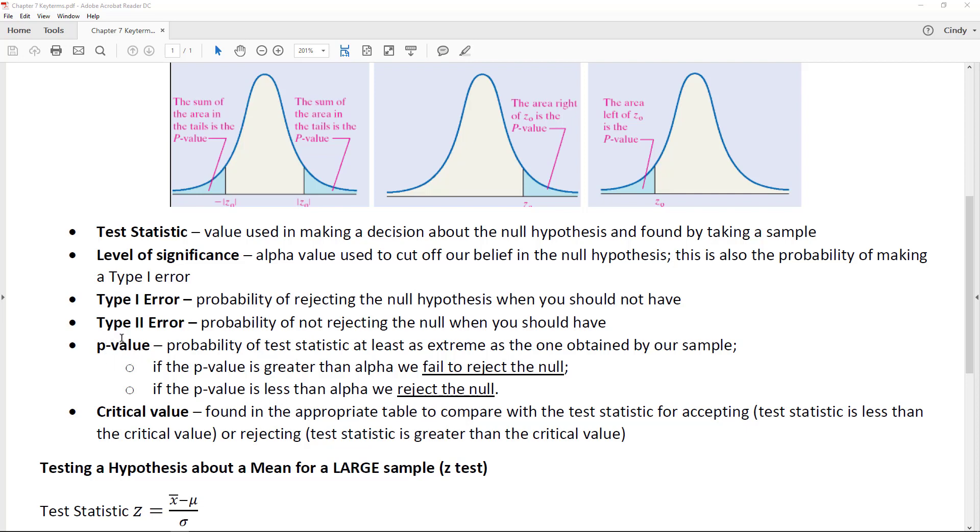better than comparing our test statistic with a critical value. Critical values are what you looked up last chapter with confidence intervals, either in the z or the t table. We're going to do both of them. A p-value—a lot of people like better because that's a probability.